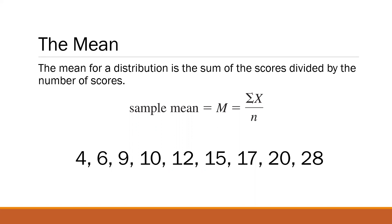In this case, we have a distribution as our given. To compute for the mean, we follow the formula M, which stands for the mean. You may also use X-bar when referring to the sample mean, but when referring to the population mean, we use the Greek letter mu. Assuming we're dealing with a sample, we use M or X-bar. The formula is the summation of X divided by N.